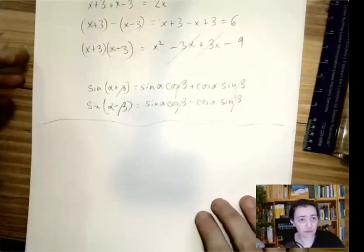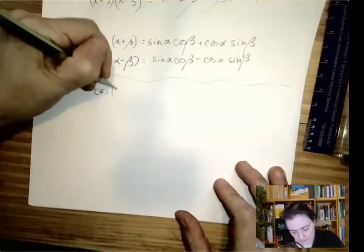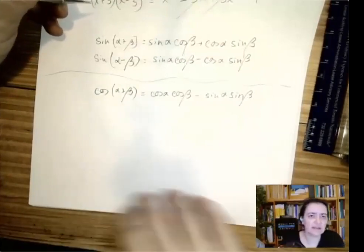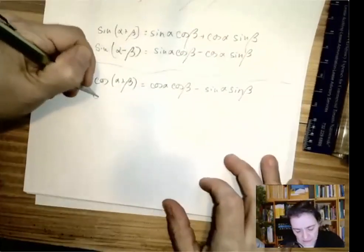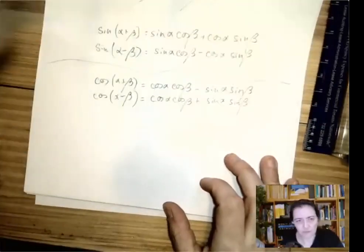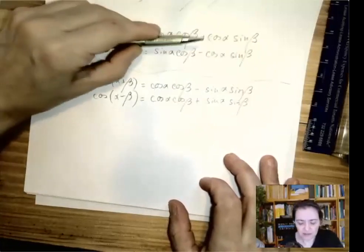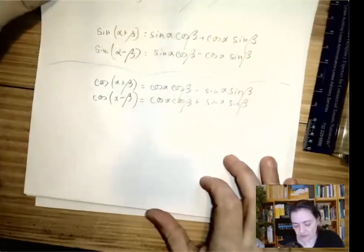The same thing is true for the cosines. Cosine of alpha plus beta is cosine alpha cosine beta minus sine alpha sine beta, and cosine of alpha minus beta is the same thing with plus here. So same piece is, one sign is identical, the other one alternating. So they're conjugates.